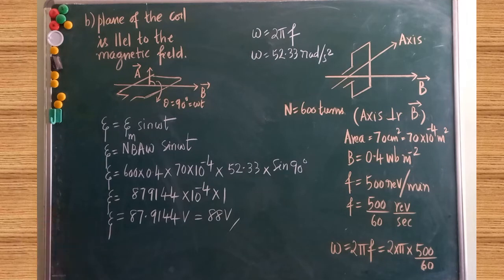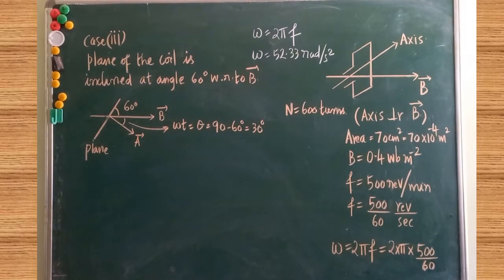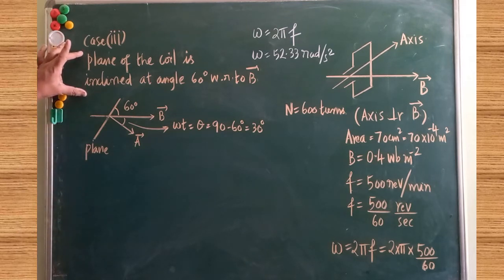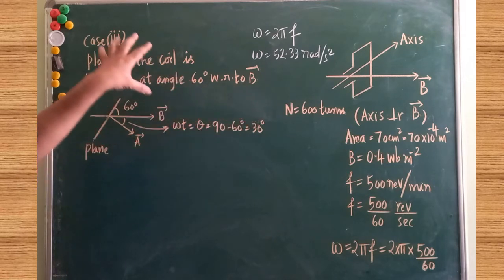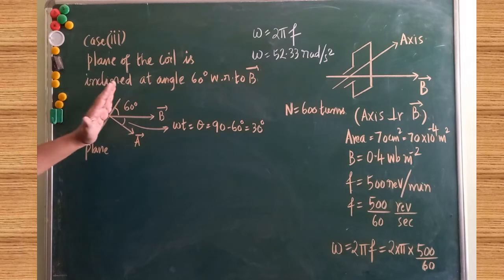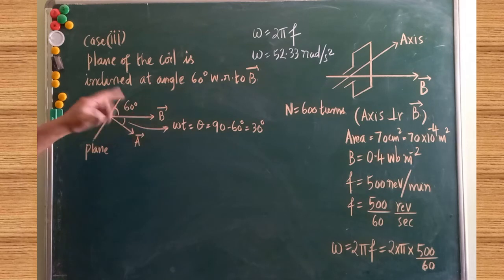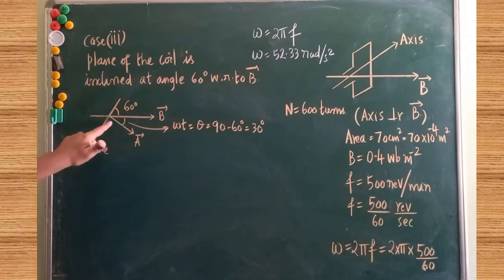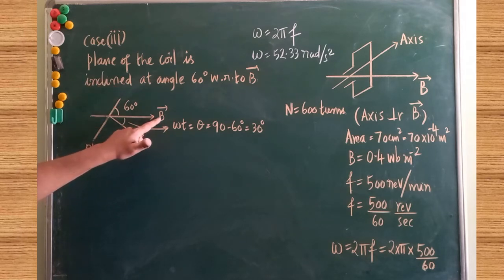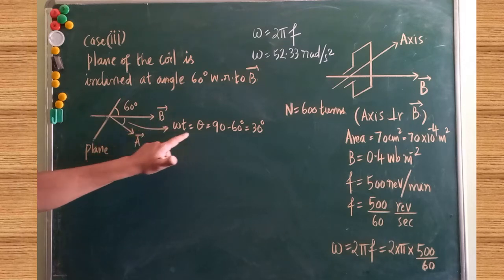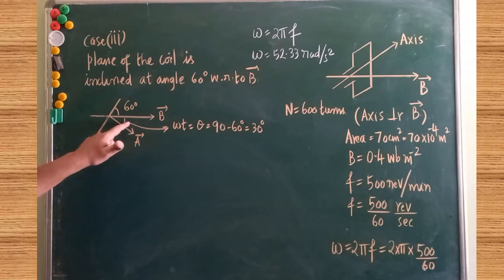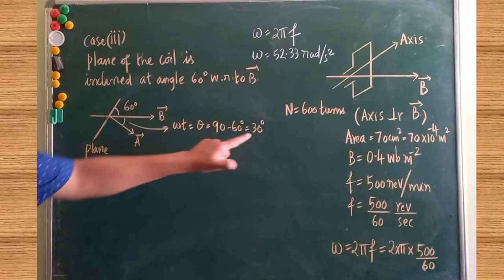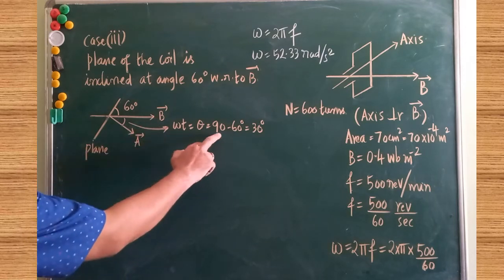We have seen case B. Now moving to case C: the plane of the coil is inclined at 60° with respect to the magnetic field. Imagine this is the plane of the coil and this is the direction of B — the angle between them is 60°. The area vector A is perpendicular drawn to the plane. The angle between A vector and B vector is theta. The total angle is 90°, so theta = 90° − 60° = 30°. The angle between A and B is 30°.